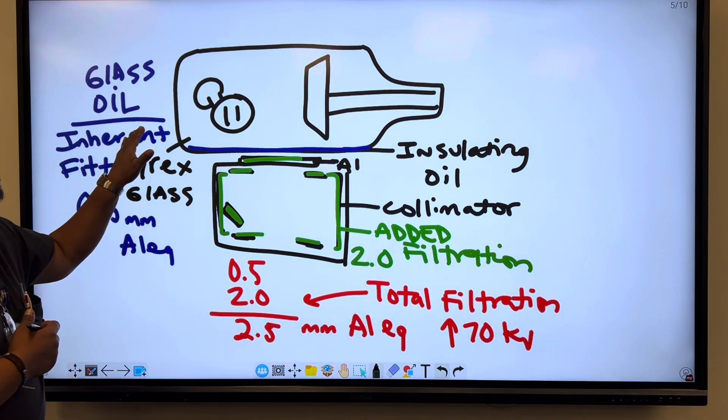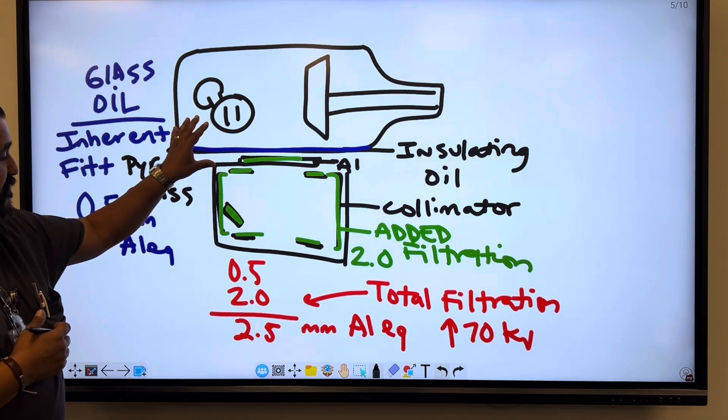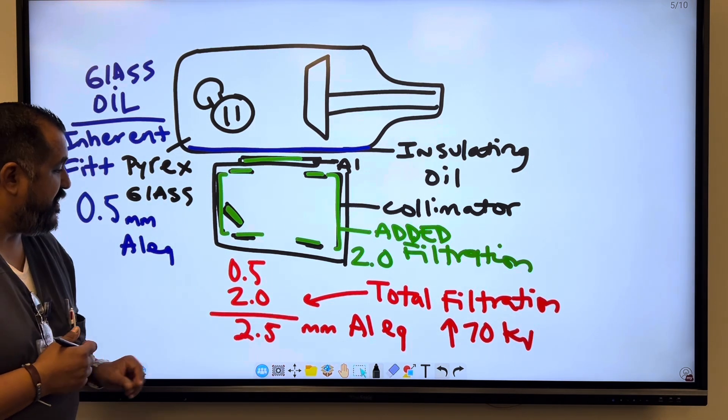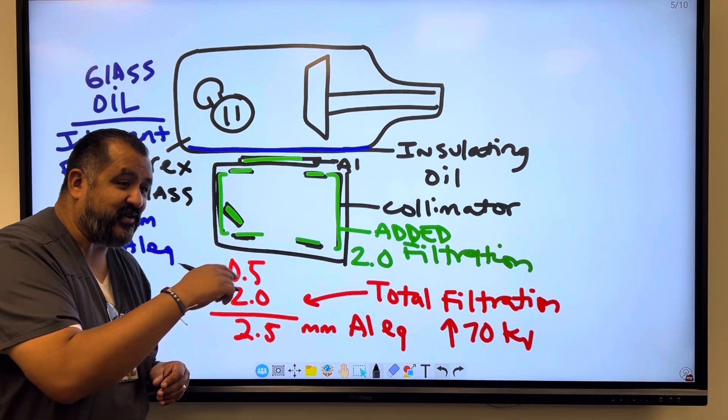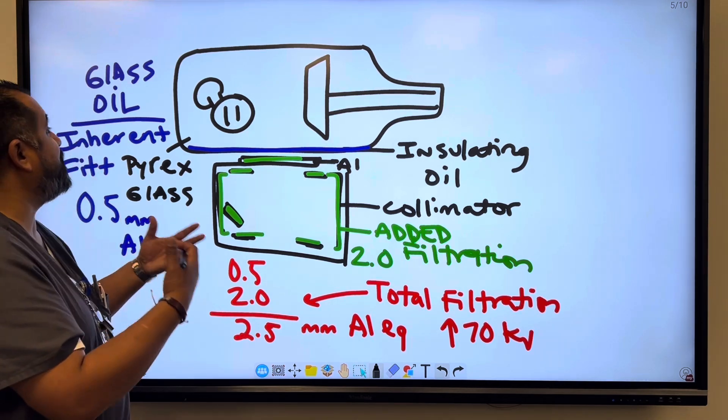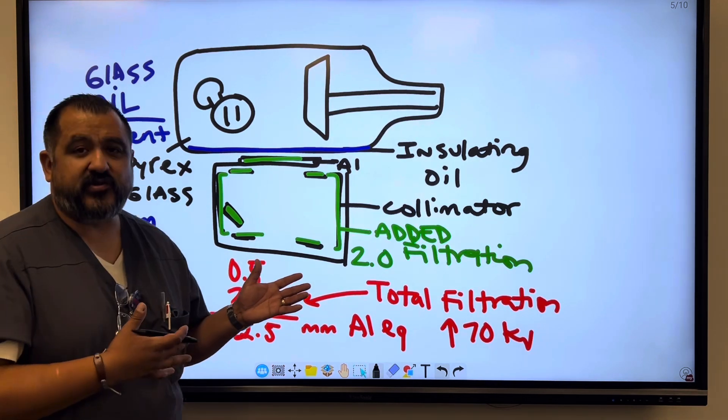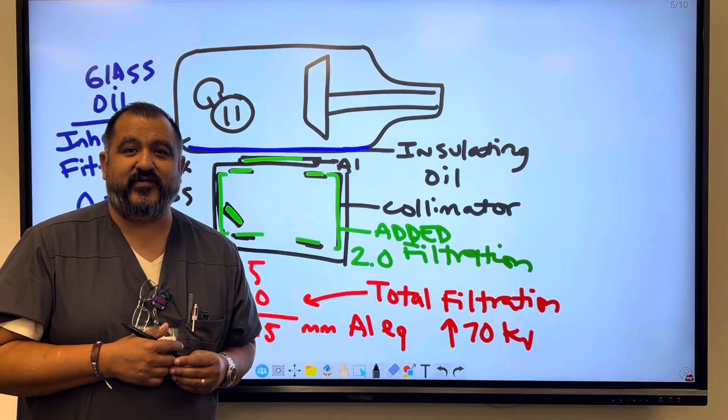Again, we have inherent, we have added, and if you add those two together, we have total filtration. And for any machine that operates above 70 kVp, under NCRP number 102, we have 2.5 millimeter of aluminum equivalent. Again, I'm hoping this quick little tutorial is going to help you understand inherent, added, and total filtration.